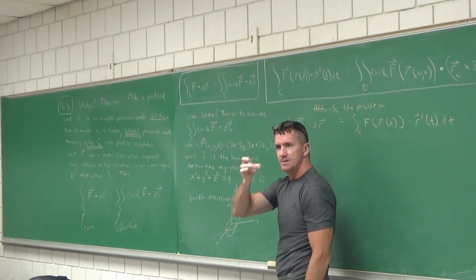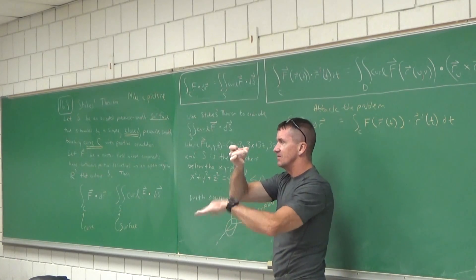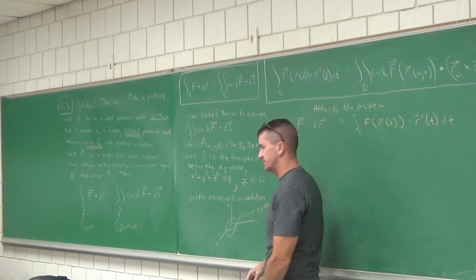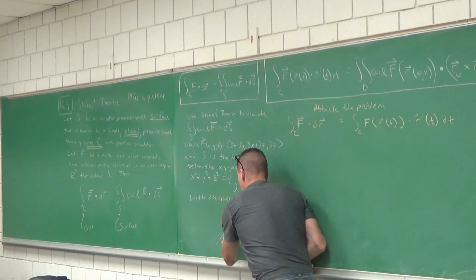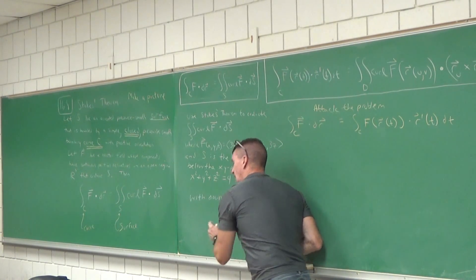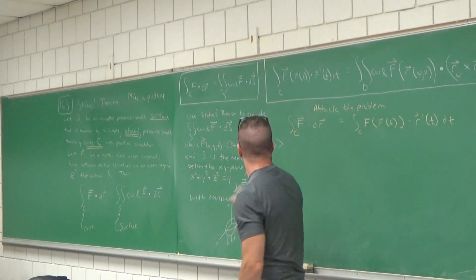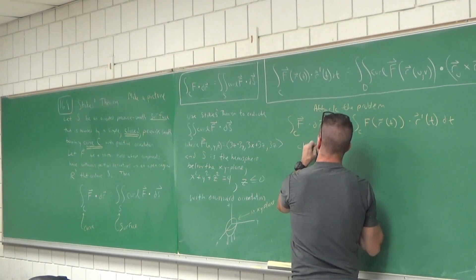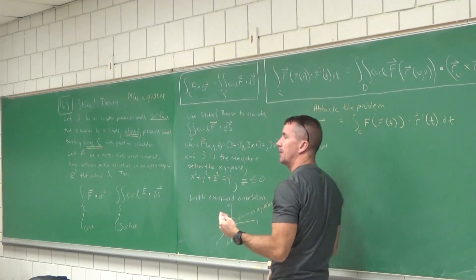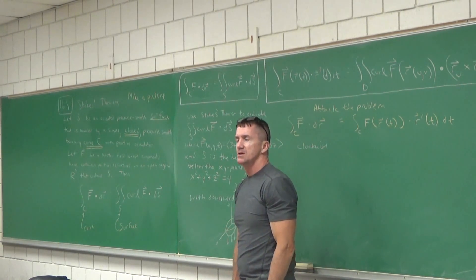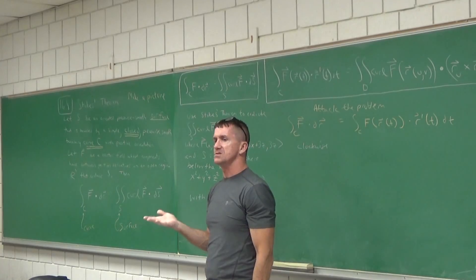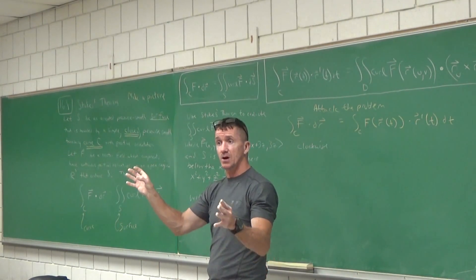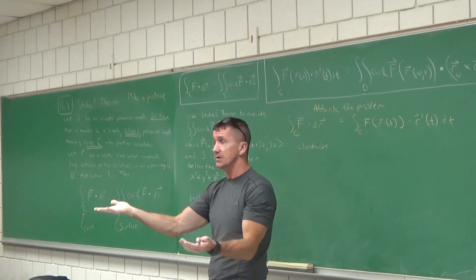Does everyone see the boundary curve? The bowl's underneath it. So if it's downward orientation, which way do the normal vectors go? Clockwise — that's the key to this problem. When we work this line integral, we're going to have to go clockwise as viewed from above. So before I did cosine before sine; to make it go clockwise, put sine before cosine in terms of the X and Y components — that'll do it.